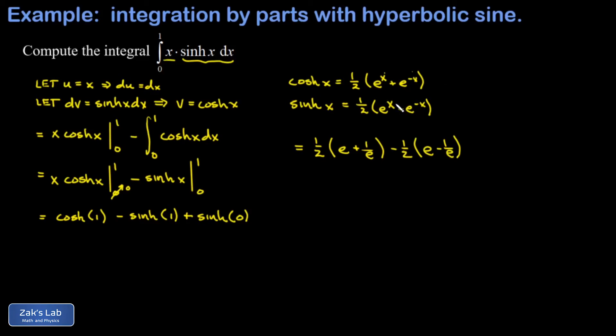But when I sub in x equals 0 into the sinh function, I get e to the 0, which is 1 for the first term minus e to the 0, which is 1 for the second term. So sinh of 0 vanishes.